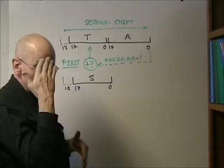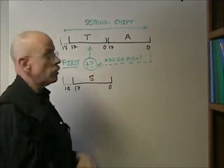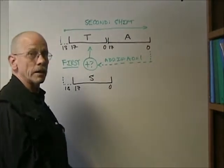After 18 cycles, done thusly, the product of A and S appears in registers T and A concatenated.